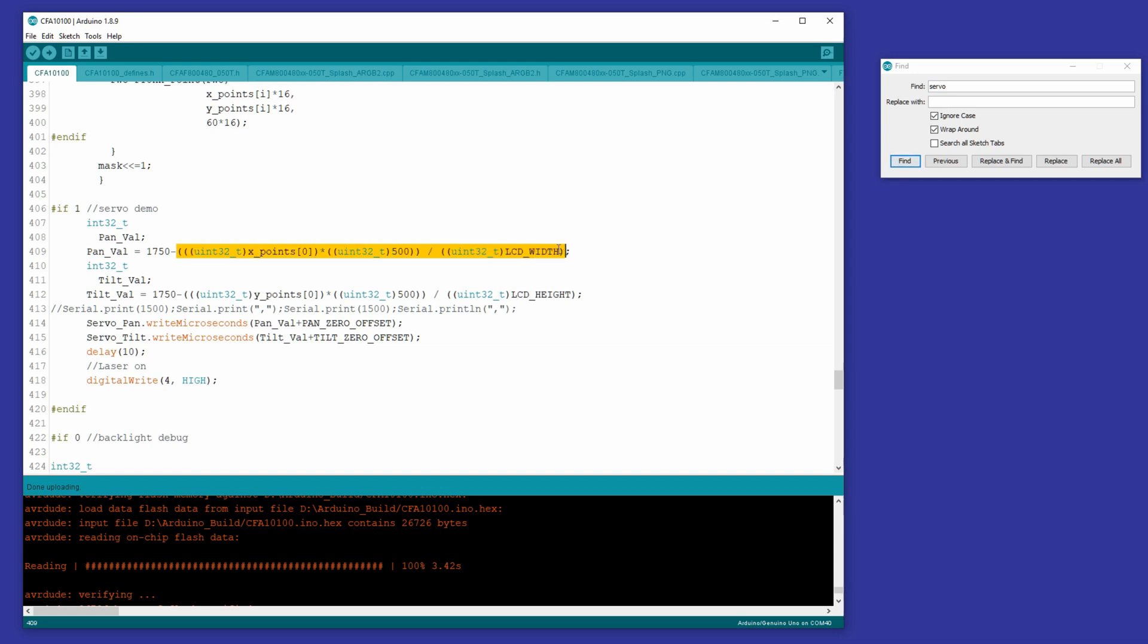So the result of this sub-expression here, when your finger's all the way to the left, it'll be zero, and when it's all the way to the right, it'll be 500. And we need this to go between 1250 and 1750, which is centered on 1500. And so this little equation does all that for us.